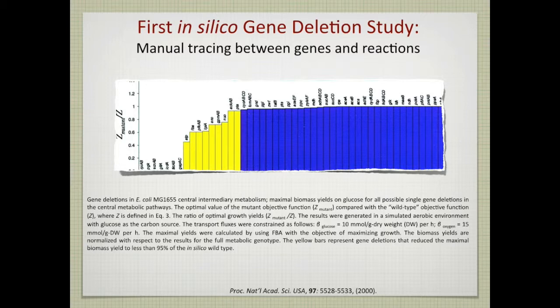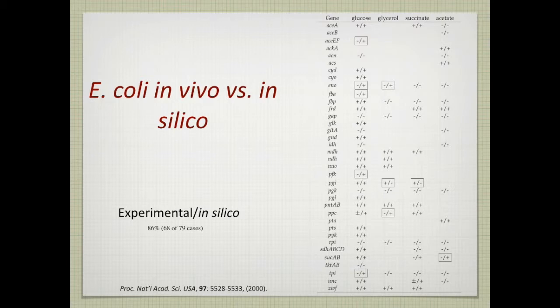So this could be computed. And believe it or not, in the year 2000, it wasn't that easy to remove genes from E. coli. That technology was developed in the mid to late 80s. But fortunately, at that time, there were about 86 cases reported of gene knockouts and viability under a series of growth conditions.